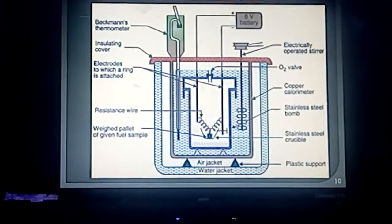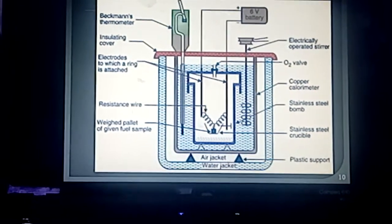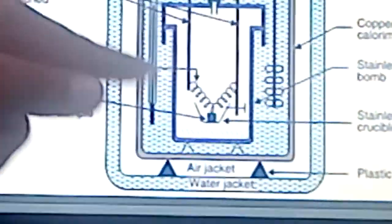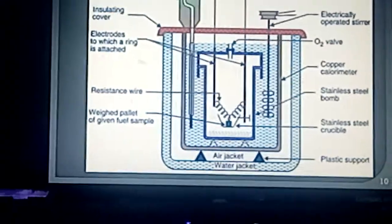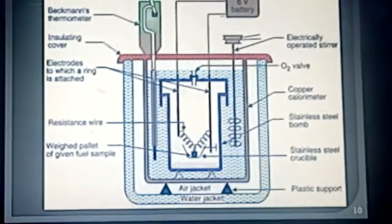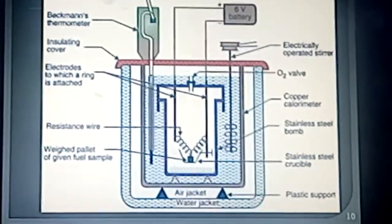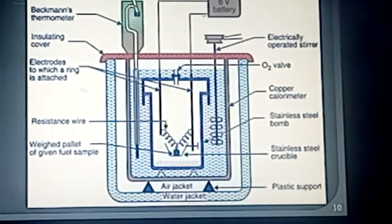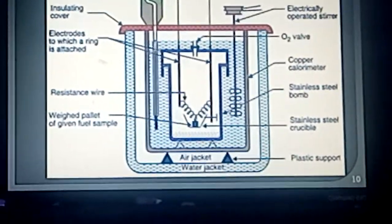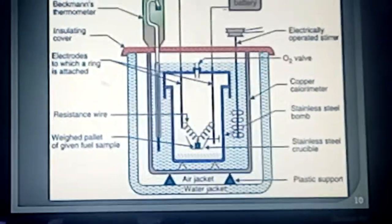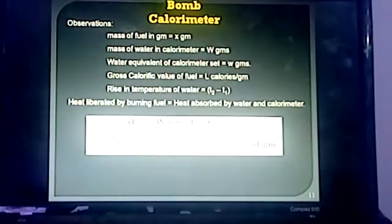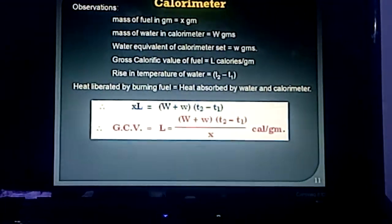The third part is the water and air jackets. The calorimeter is surrounded by air jackets and water jackets to avoid heat loss due to radiation. There are insulator stands between the calorimeter and the water jackets. The fourth part is the accessories, which include a stainless steel oxygen cylinder and a pellet press. This completes the construction of the bomb calorimeter.